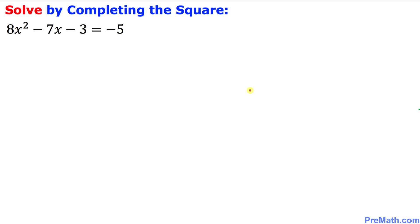Let's go ahead and get started. The very first thing we want to make sure is that only x variables are on the left hand side. That means this constant negative 3 must go on the right hand side. So we can write 8x squared minus 7x on the left hand side and negative 5 on the right hand side.